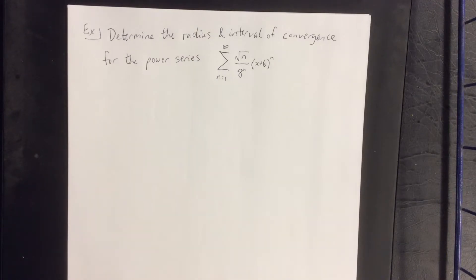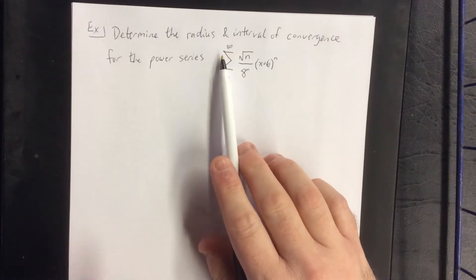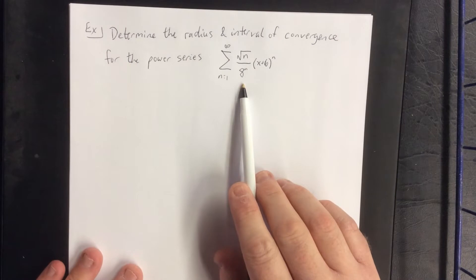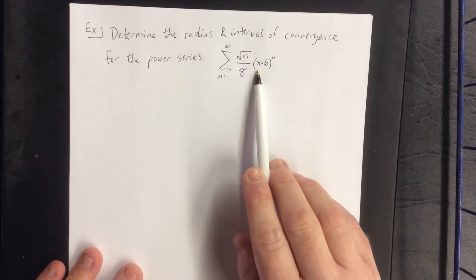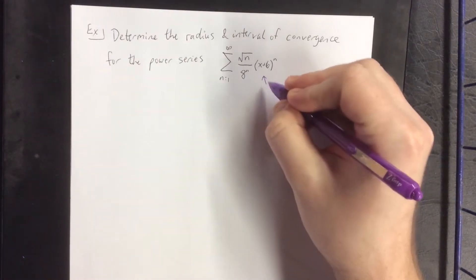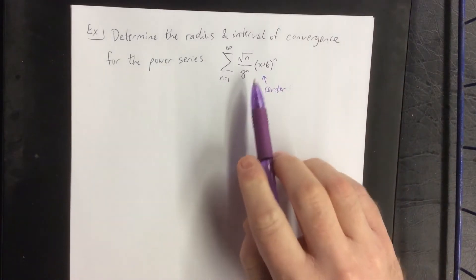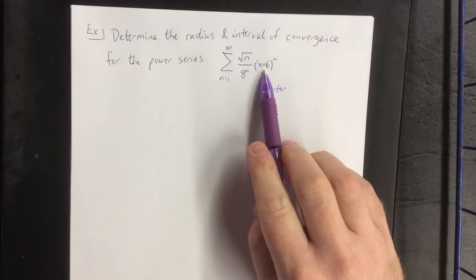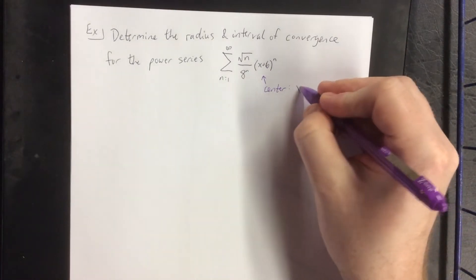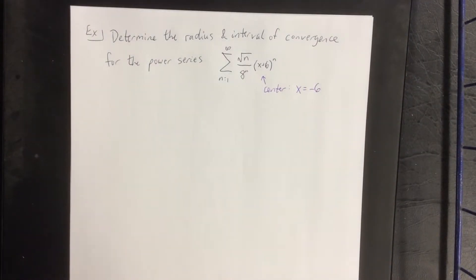In this example we're going to determine the radius and the interval of convergence for the following power series. We have the sum from n equals 1 to infinity of the square root of n divided by 8 raised to the nth power times x plus 6 raised to the nth power. The center of our power series is found by setting x plus 6 equal to 0 and solving for x, which gives us x equals negative 6.